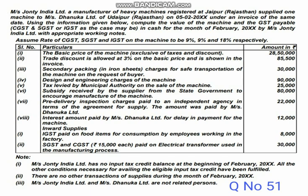On 5th February 2021, under an invoice of the same date, using the information given below, compute the value of the machine and the GST payable — that is CGST, SGST, IGST — as the case may be. This is for the month of February 2020 for Messers John T. India Limited with appropriate working notes. Assume rate of GST: CGST, SGST, IGST — 9, 9, and 18 percent.